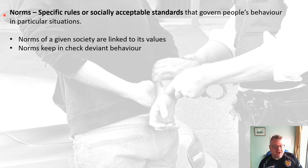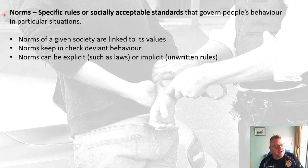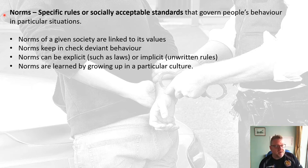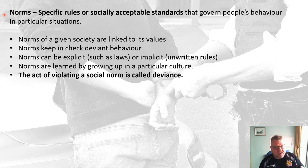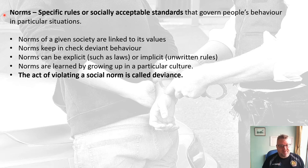Norms keep in check deviant behaviour — and we'll define deviant behaviour in more detail in a minute. Norms can be explicit, such as laws, or implicit, such as unwritten rules. When we come to defining deviance, it's really quite simple: if you violate a social norm, that is deviance. So deviance is the act of violating a social norm.